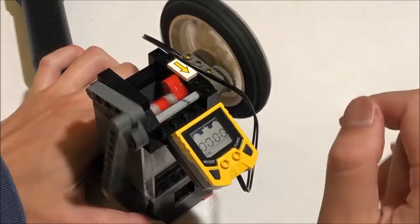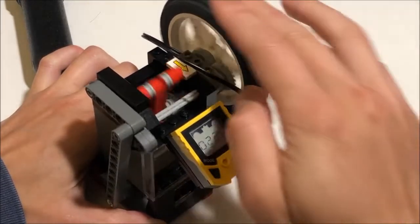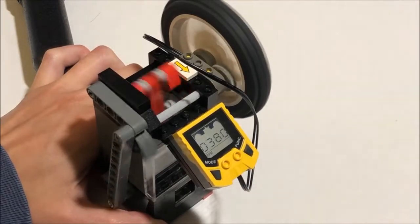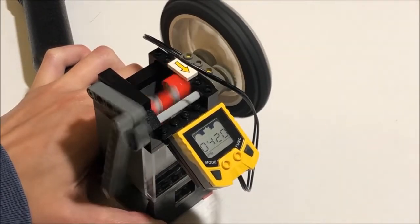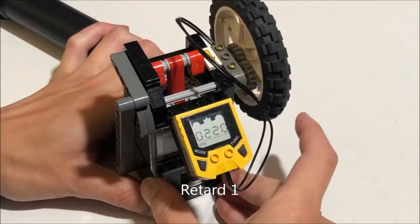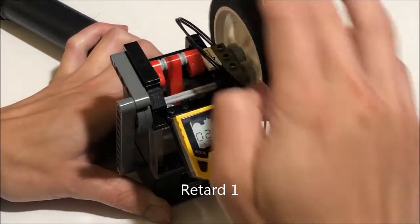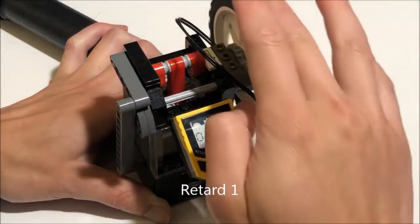In the direction where the valve closes faster, the engine ran at 460 RPM with the base timing. Retarding the timing by one gear tooth already didn't work, but advancing the timing increased the speed like before.